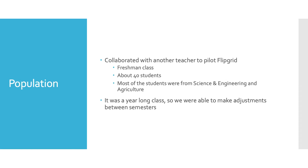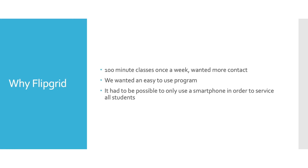The students we had in our class were freshman students, about 40 students in the class. Most of them were either from the science and engineering department or from the agriculture department. It was a year-long class, but our study was done in just the first semester. We had a 100-minute class once a week, and we wanted the students to have more engagement with English besides coming to class. So we wanted an easy-to-use program they can do on their own, and we wanted students to be able to use a smartphone in case they didn't have a computer or had spotty internet.